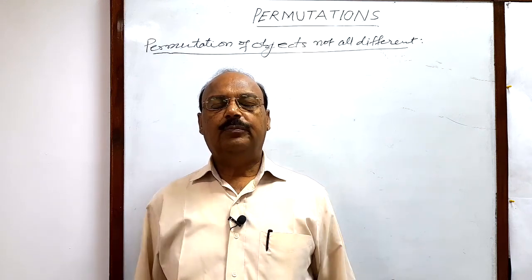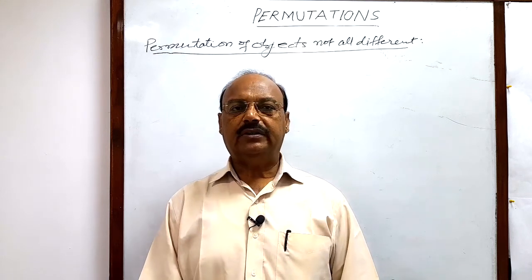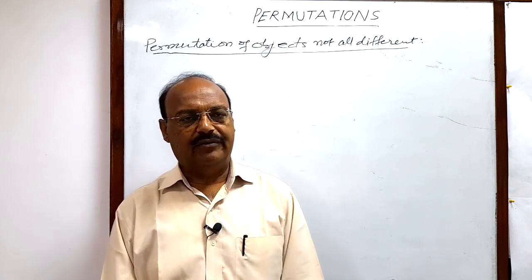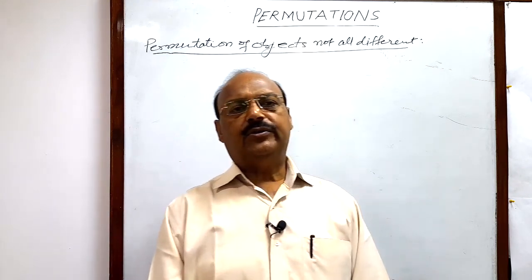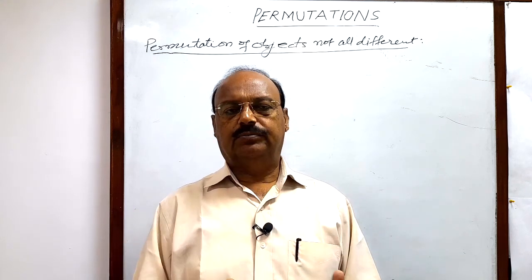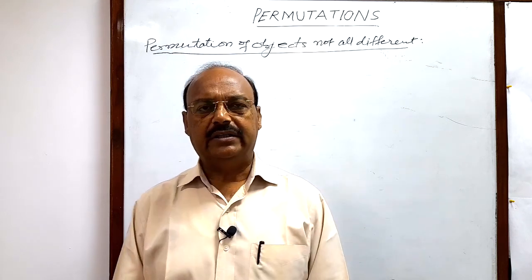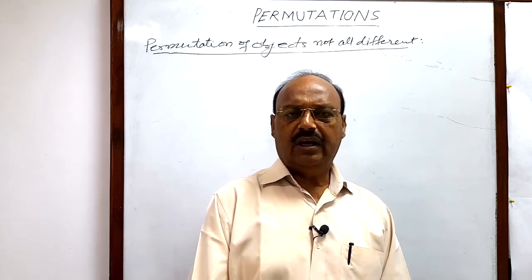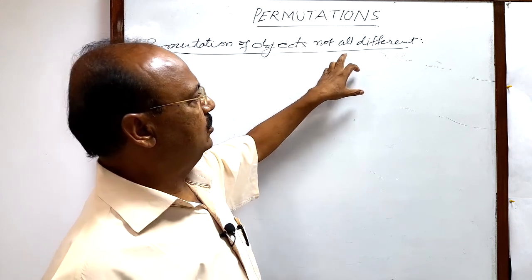Welcome students. In the previous videos we have seen so many problems from the chapter permutations. There are different types of problems and we have already solved many of them. We are going to discuss a special type of problem of permutation: when n things are given but all the things are not different. So our topic is permutation of objects not all different.